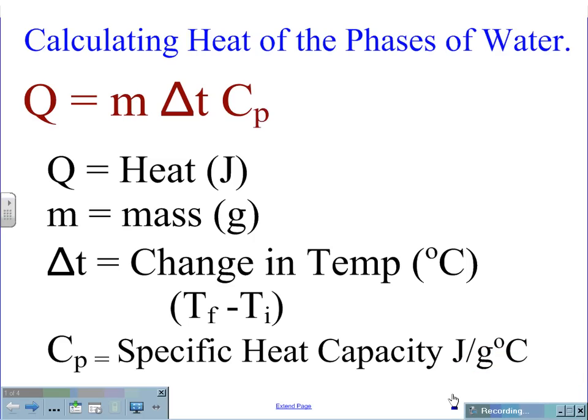Calculating the heat of the phase changes of water. Using the base equation Q equals m delta t Cp, where Q is the heat measured in joules, m is the mass measured in grams, delta t is represented by Tf minus Ti, the change in temperature in degrees Celsius, and the specific heat capacity is measured in joules per grams degrees Celsius.